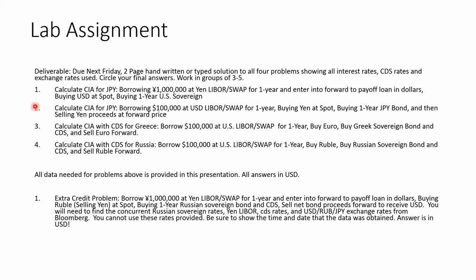Problem two: borrow $100,000 at U.S. LIBOR, buy yen at the spot rate, buy a one-year bond — that gives you yen next year — then sell the yen forward at the forward price to get back to dollars.